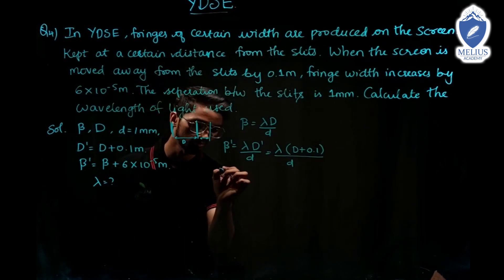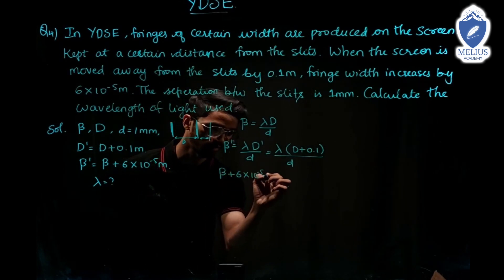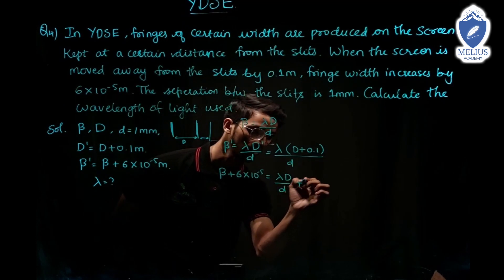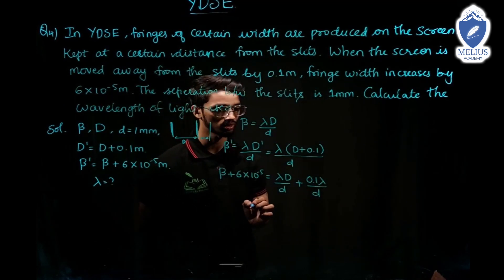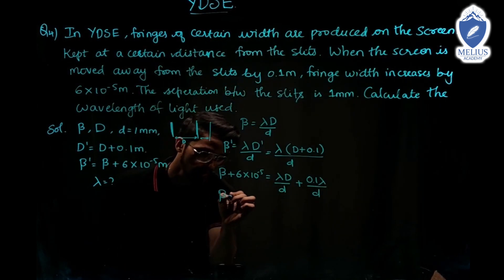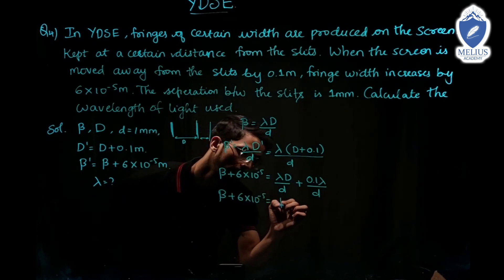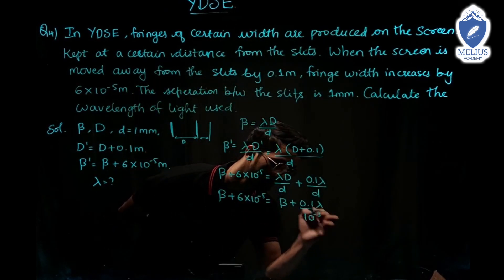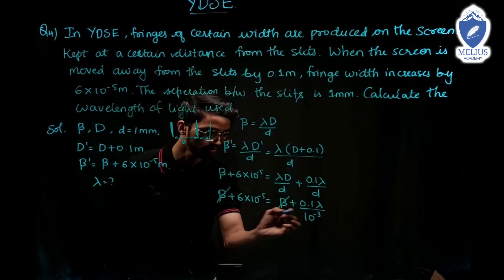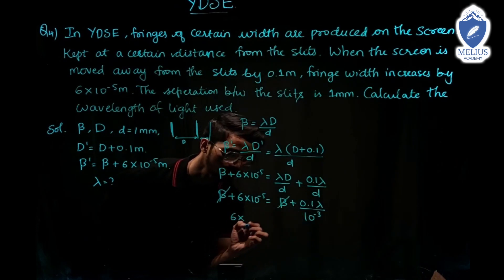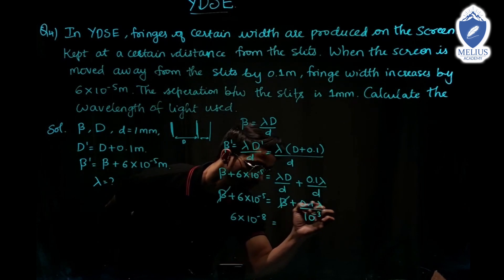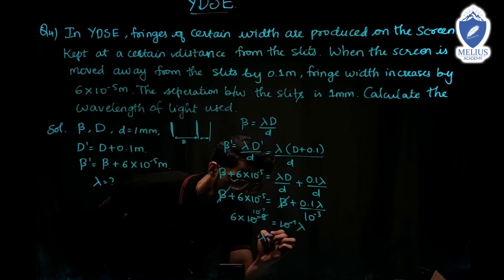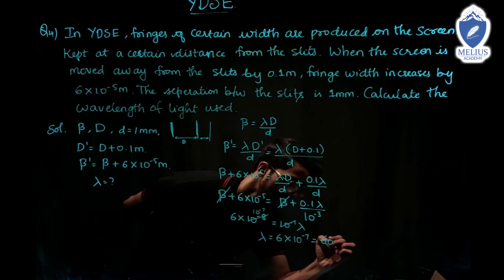Beta plus 6 into 10⁻⁵ equals (lambda D by d) plus (0.1 lambda by d). Beta cancels from both sides, giving 6 into 10⁻⁵ equals 0.1 lambda divided by small d = 10⁻³ meter. So 6 into 10⁻⁵ into 10⁻³ equals 10⁻¹ times lambda. Therefore lambda equals 6 into 10⁻⁷ meter, which equals 600 nanometer.